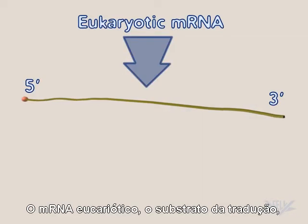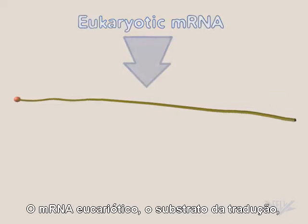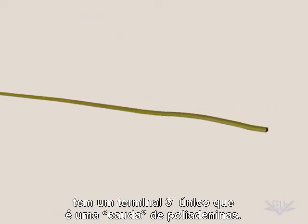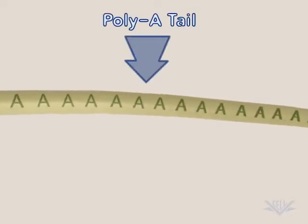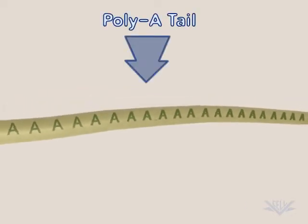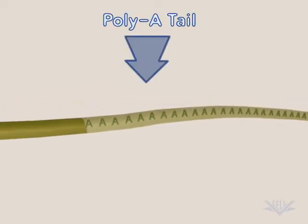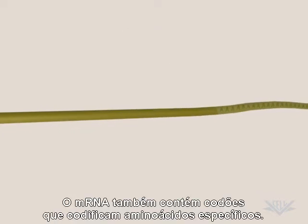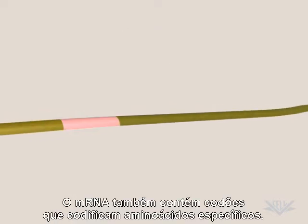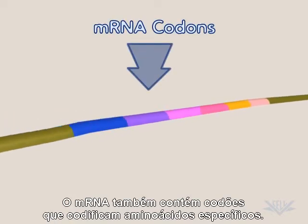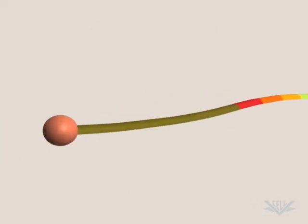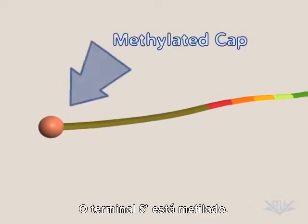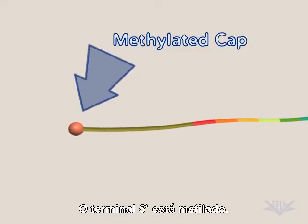Eukaryotic mRNA, the substrate for translation, has a unique 3' end called the poly-A tail. mRNA also contains codons that will encode for specific amino acids. A methylated cap is found at the 5' end.